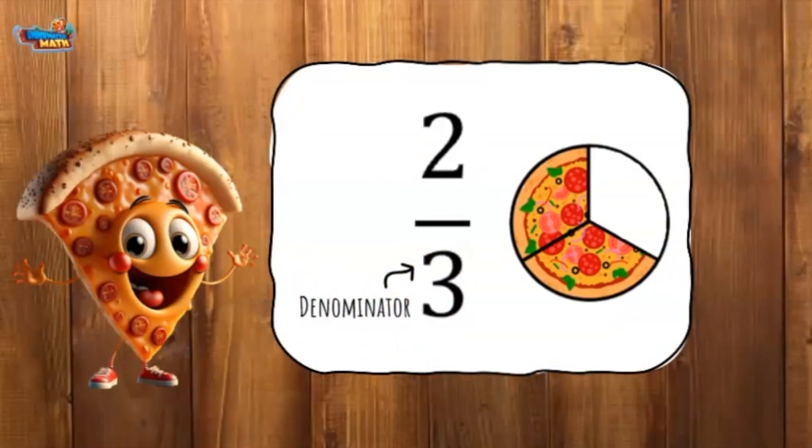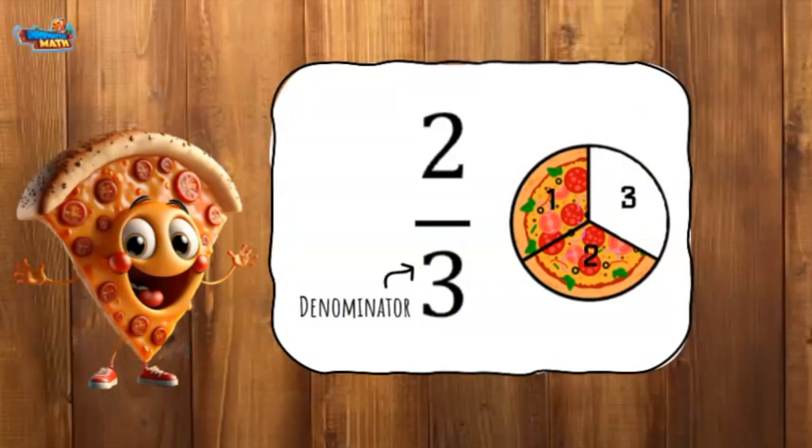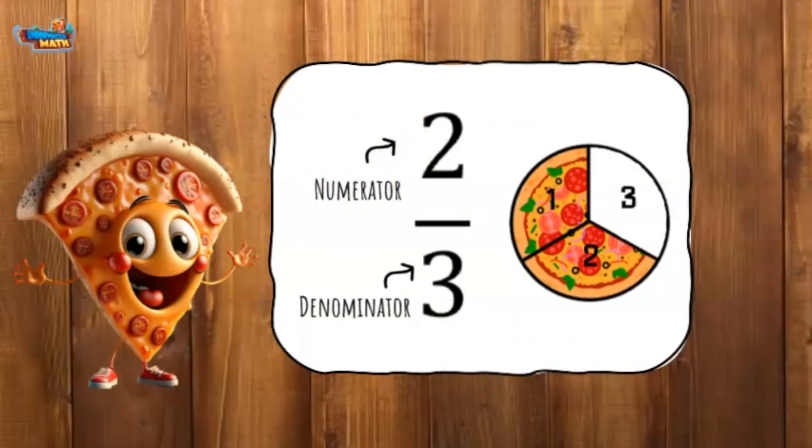The bottom number of a fraction, called the denominator, shows how many equal parts it takes to make the whole. In our example, it takes three equal parts to make the whole. The top number represents the number of parts being described. It is called the numerator.